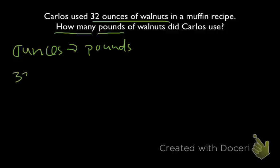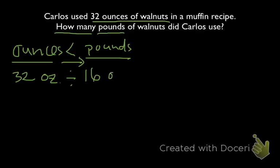We have 32 ounces, and if we're changing from ounces to pounds, ounces are smaller than pounds, which means that we're going to have to divide since we're changing from a smaller unit to a larger unit. So you have 32 total ounces. We're going to divide that by the number of ounces there are in a pound. There are 16 ounces in a pound.